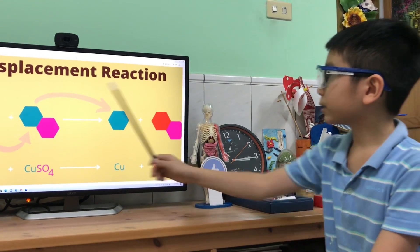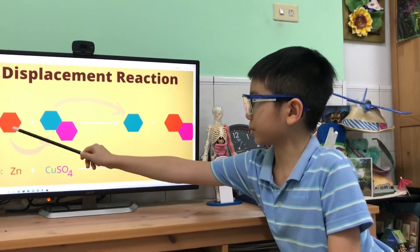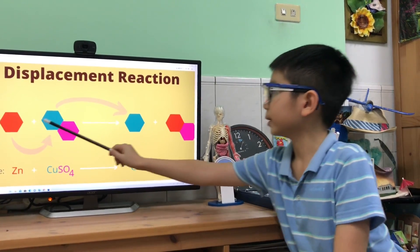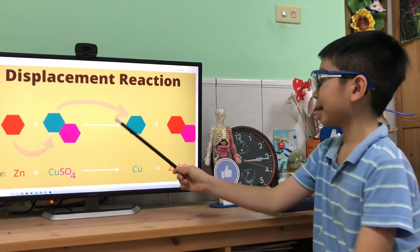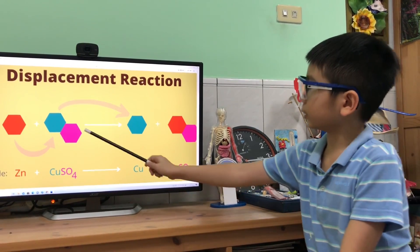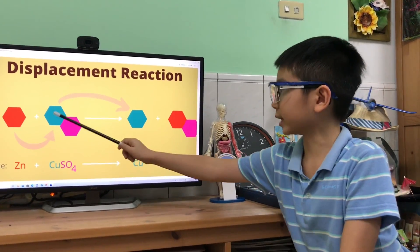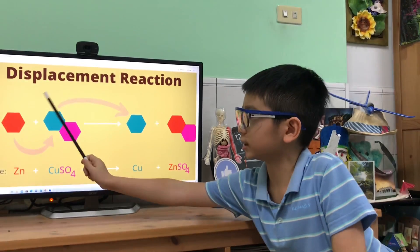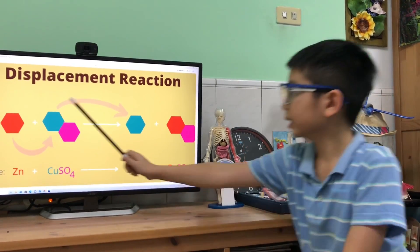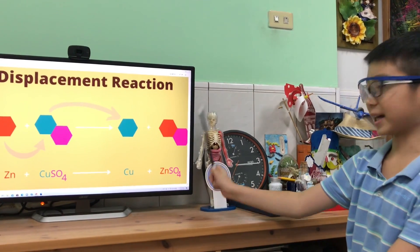So you can see the displacement of the atoms. First this is zinc, and then copper and sulfate are together. Now the copper is displaced with zinc which makes copper plus zinc sulfate.